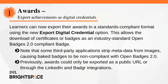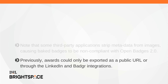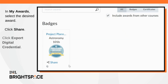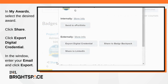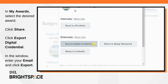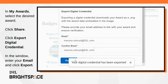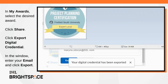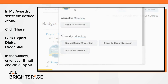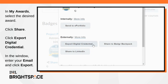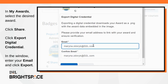Previously, awards could only be exported as a public URL or through the LinkedIn and Badger integrations. To use the new feature, navigate to My Awards and select the desired award. Click Share, then click Export Digital Credential. In the new window, enter and confirm your email, and then click Export.